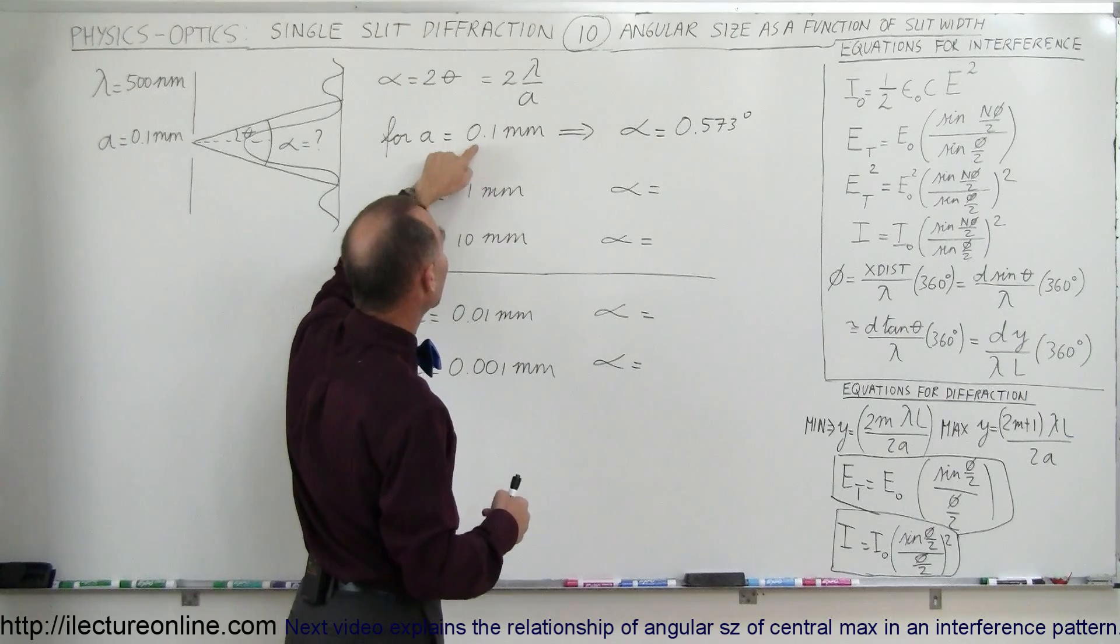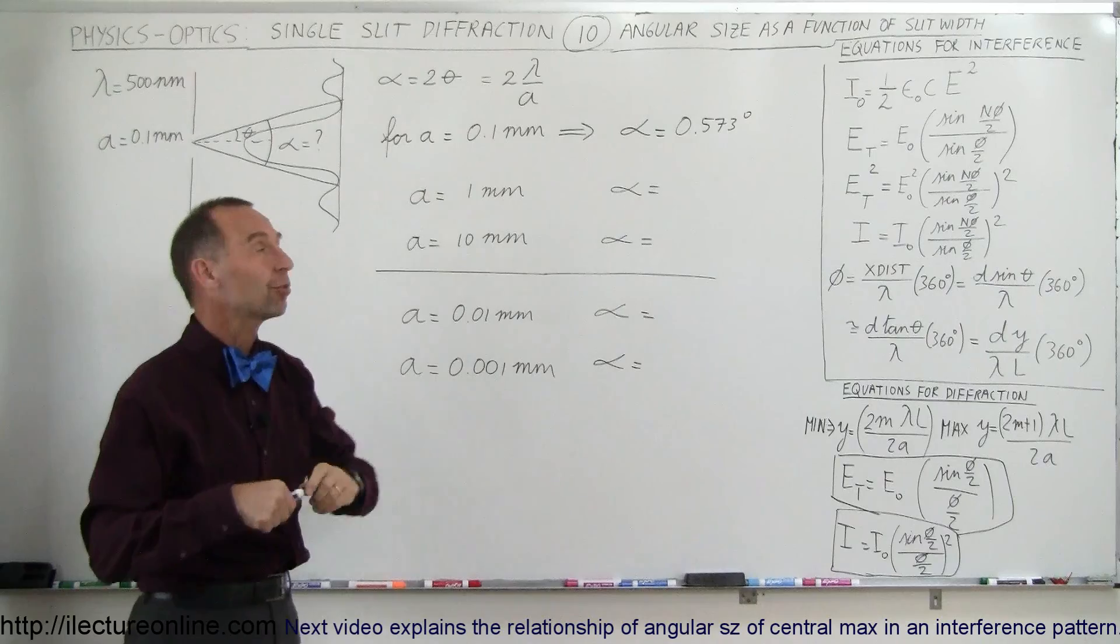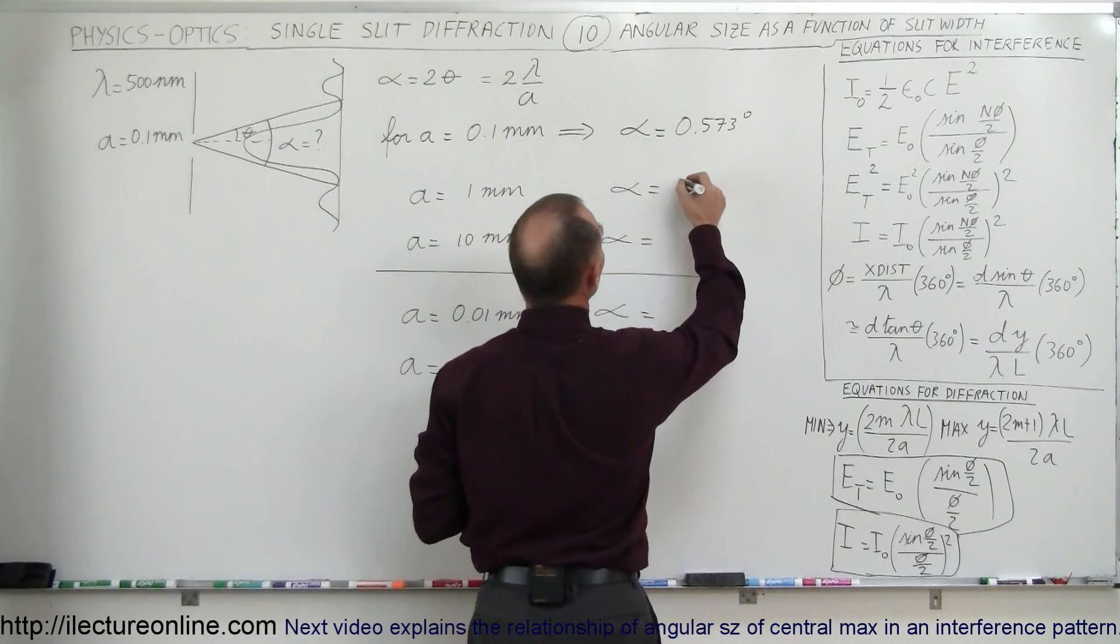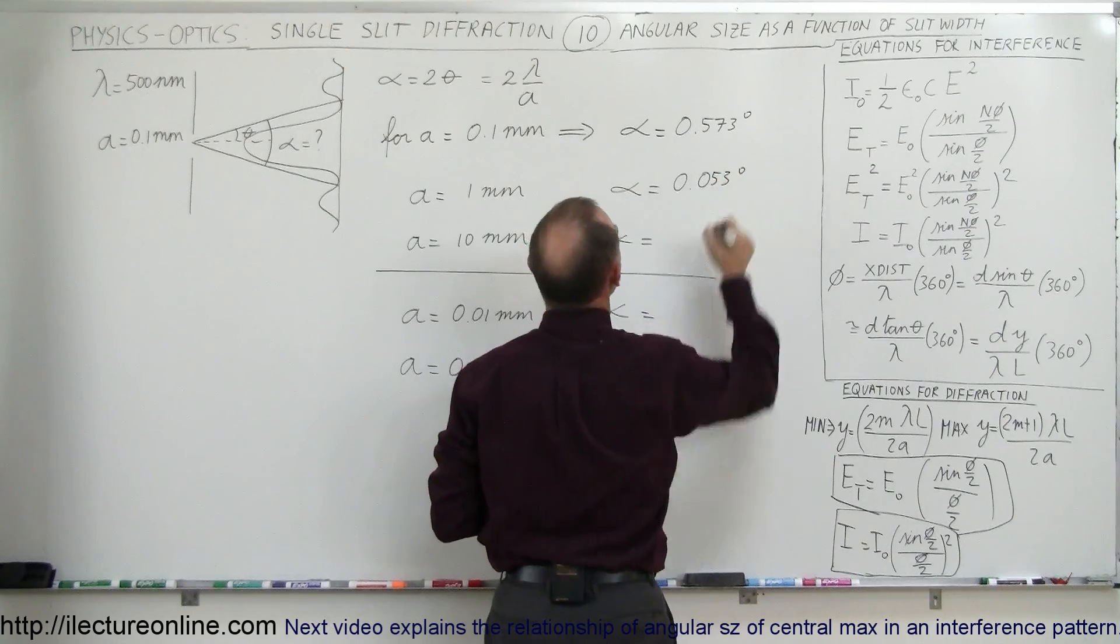If A becomes 10 times the size, we divide by a number that's 10 times as big, so the angle is going to be 10 times as small, which means that the angular size will now be 0.0573 degrees.